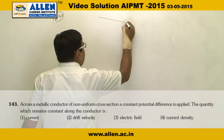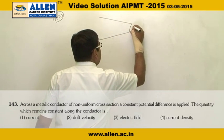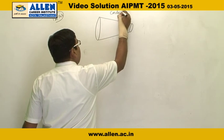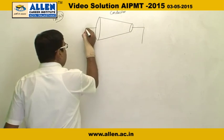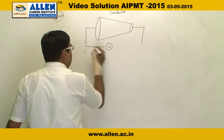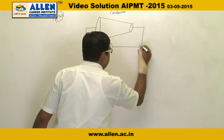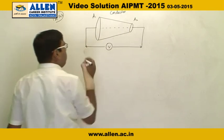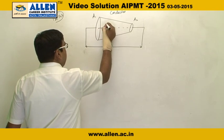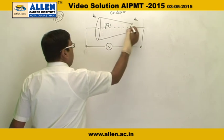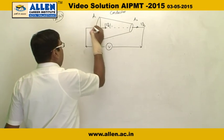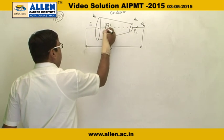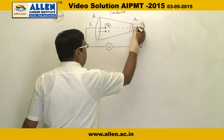Question 143. According to the question, a conductor of non-uniform cross-sectional area with a potential difference V is given. In this case, cross-sectional area is different, drift velocity is different, and electric field would also be different, but the value of current at this section and at this section would be absolutely the same.